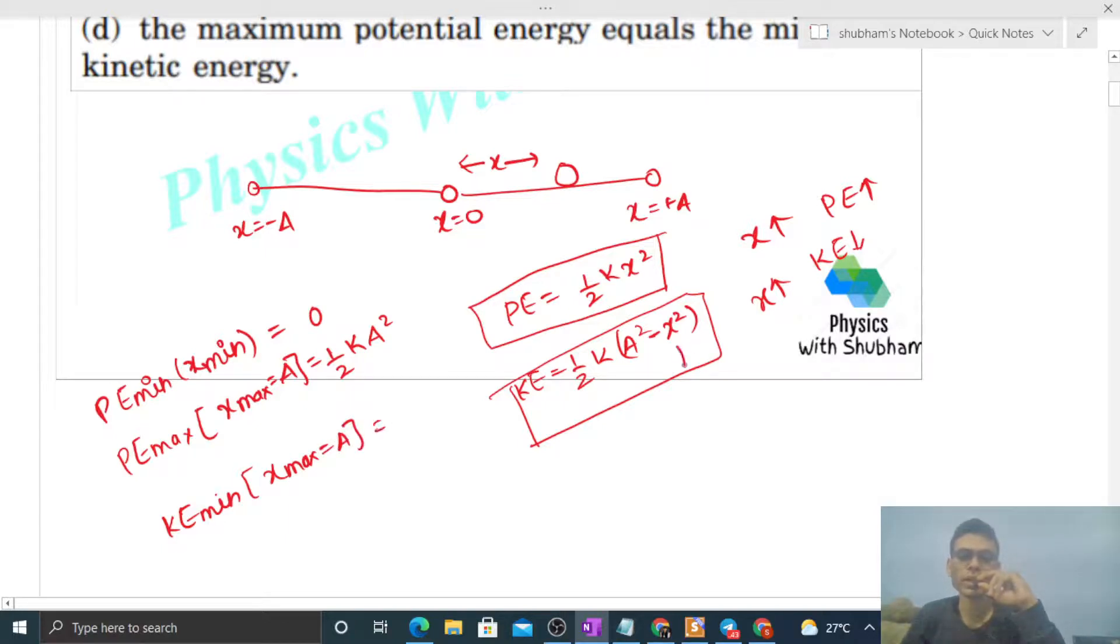So here if I put A in place of x, then kinetic energy minimum will be zero. Similarly, kinetic energy maximum will be for minimum value of x, that is zero. So if we put minimum x as zero here, what are we getting? Half of k into A square.